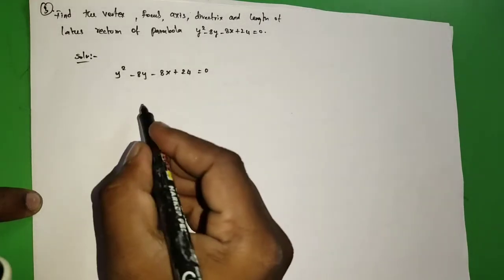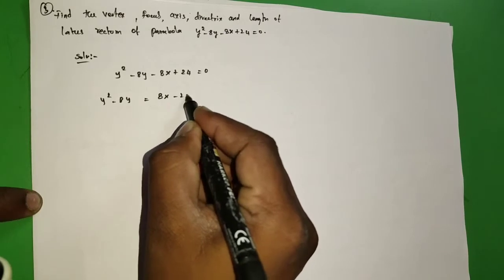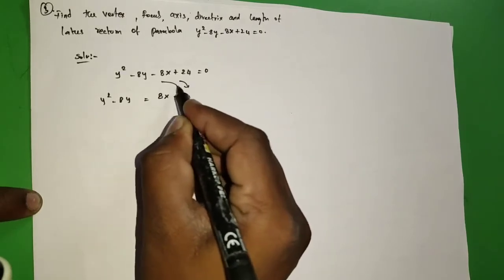So y² - 8y = 8x + 24. Just rearrange y terms and x terms.